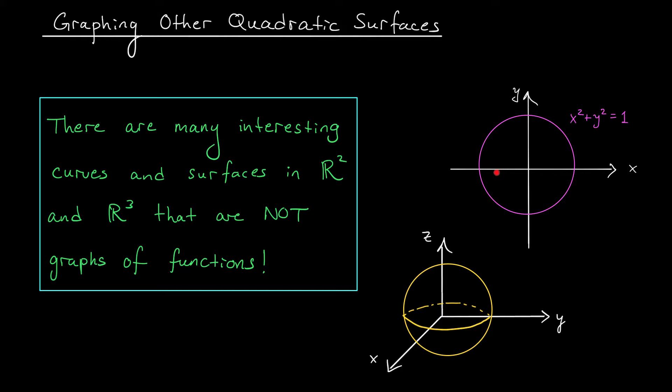Take, for example, a circle. A circle is not the graph of a function y equals f of x, because it fails the vertical line test. Nevertheless, if we're given this equation, we may still be interested in representing it graphically, which is exactly what we're going to do here with multivariable functions.